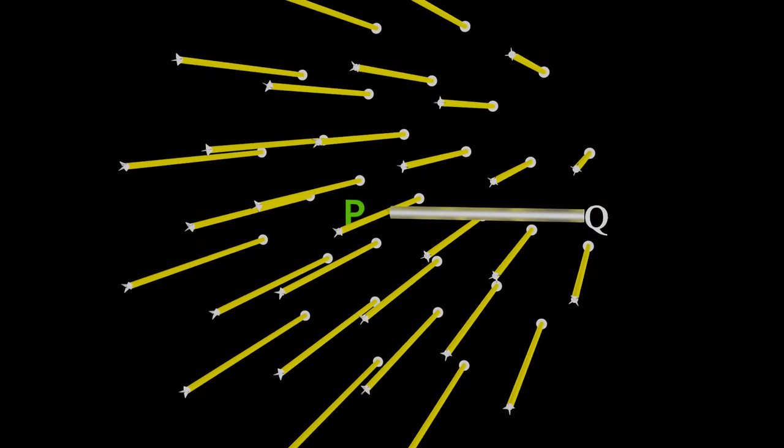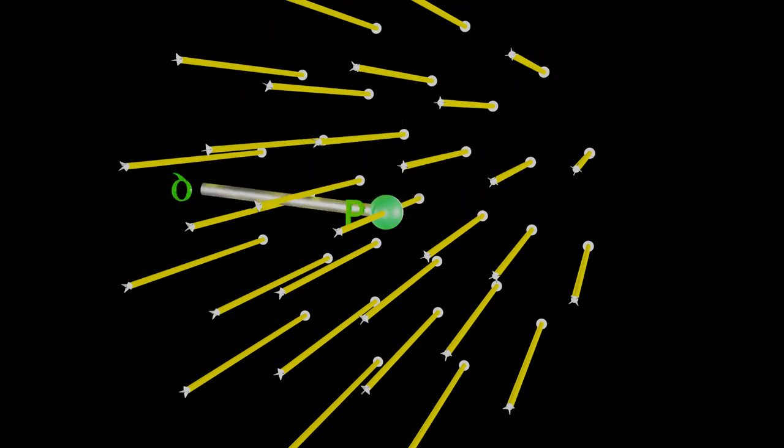To understand EMF induced in a rotating conductor, let's take a conductor PQ placed perpendicular to a magnetic field and the magnetic field is directed inward. A conductor PQ pivoted from the end P so that the conductor could rotate about P.